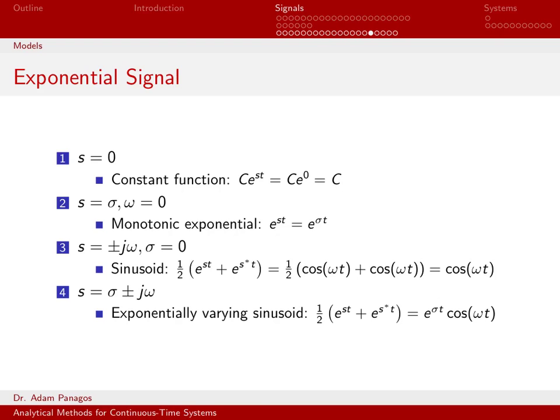The most general case is really case 4, where neither sigma or omega is equal to 0. And in that case, we just call this an exponentially varying sinusoid that we can get out.